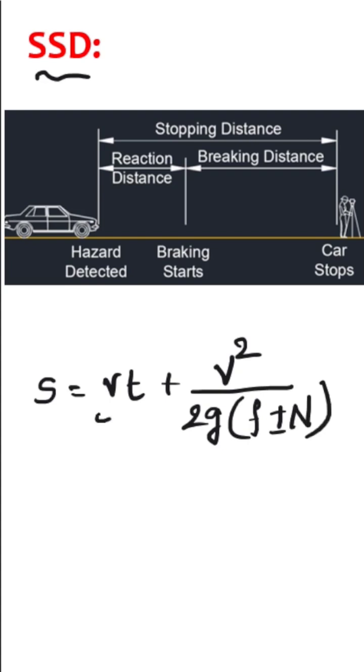Here VT is the lag distance, it is nothing but reaction distance as given in the figure. And V squared by 2G into F plus or minus N is nothing but the braking distance.